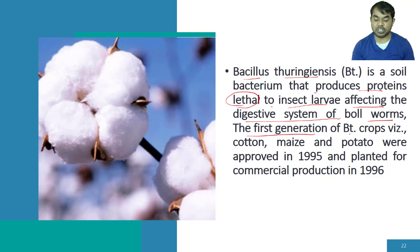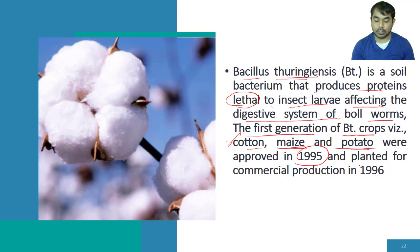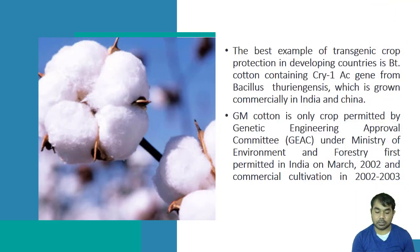The protein produced by this bacterium gene is lethal when it enters the digestive system of the boll worm. The first generation of BT crops — cotton, maize, and potato — were developed with the help of Bacillus thuringiensis. BT crops were proved in 1995 and planted for commercial production in 1996.